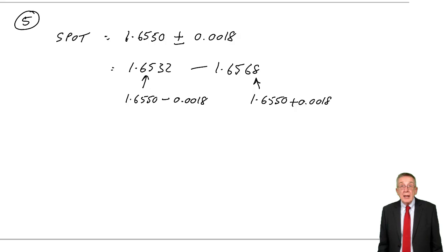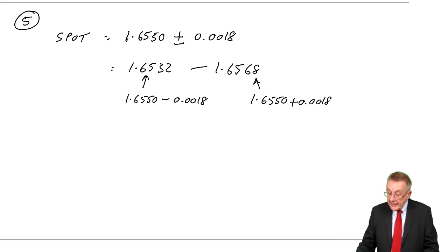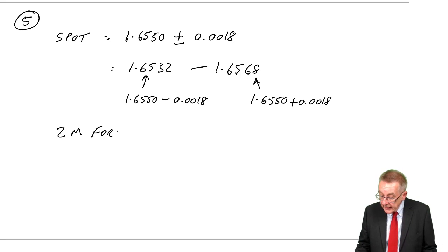The spot rate is of no relevance here. We need the forward rate. But in exactly the same way, the two month forward rate: 1.6623 minus 0.0020, so the lower rate is 1.6603.